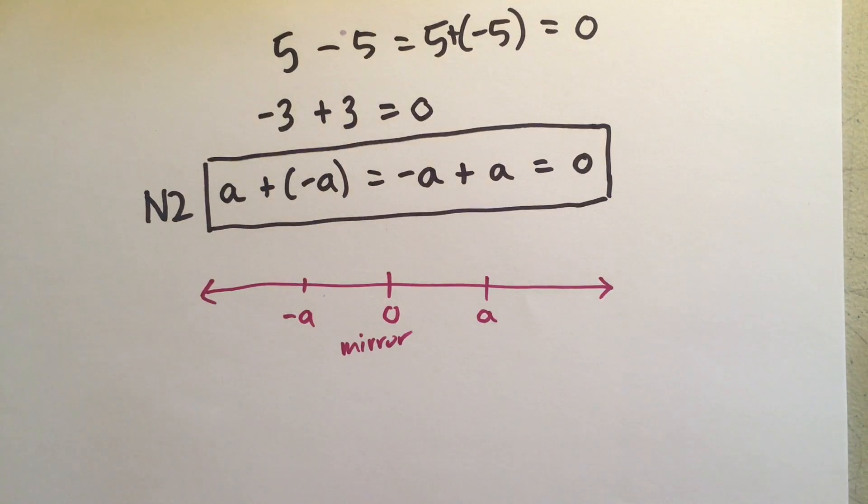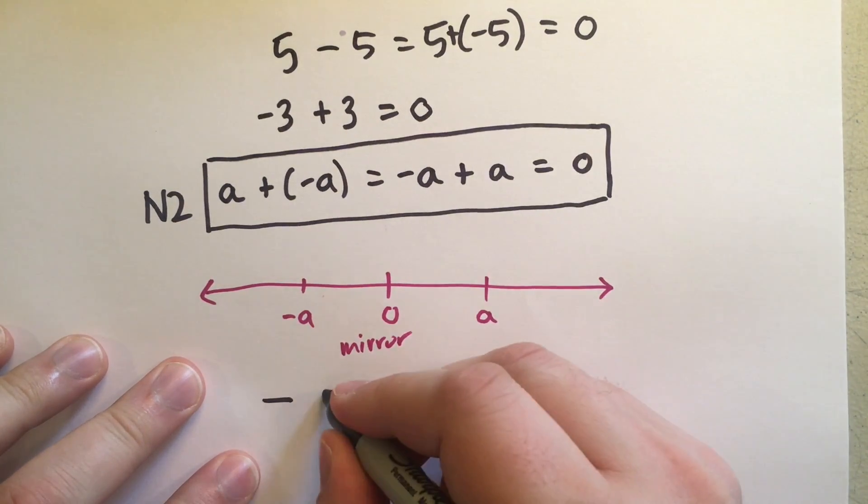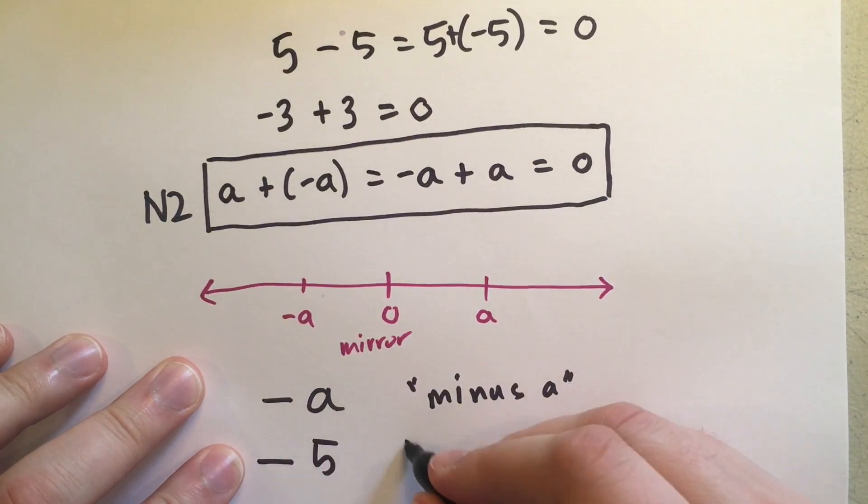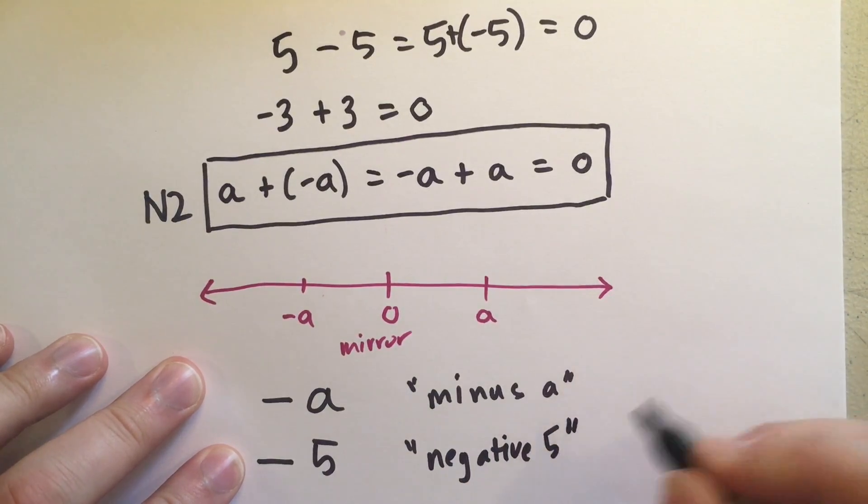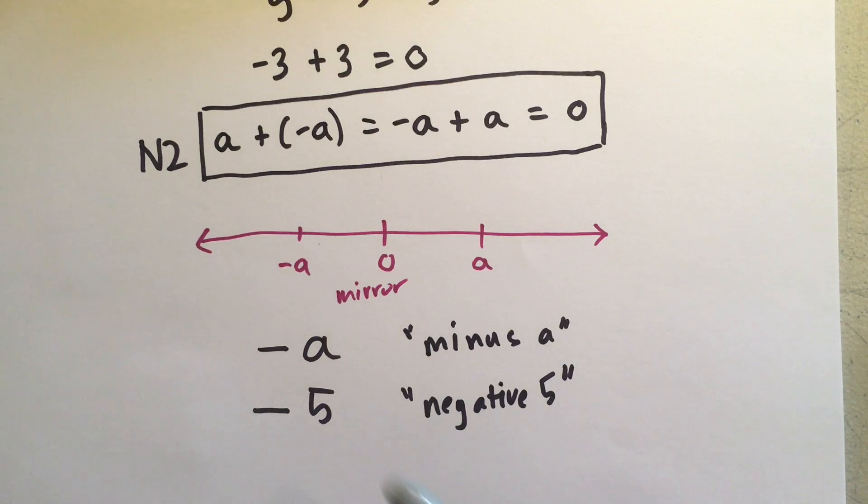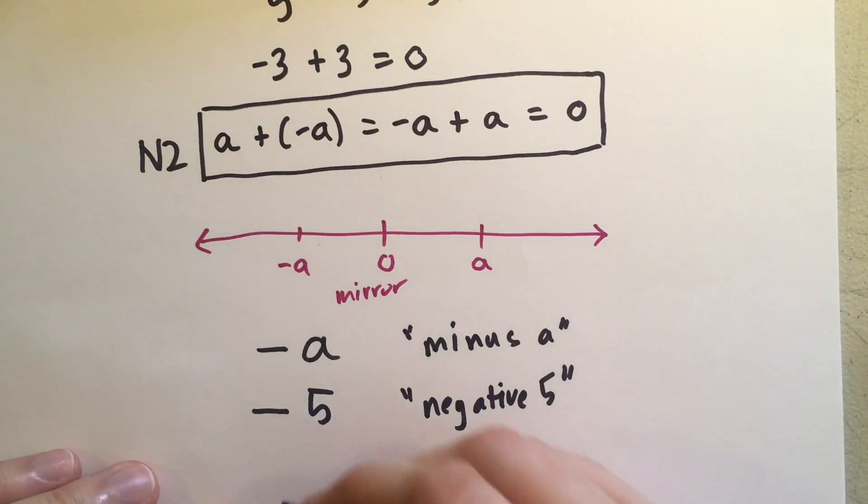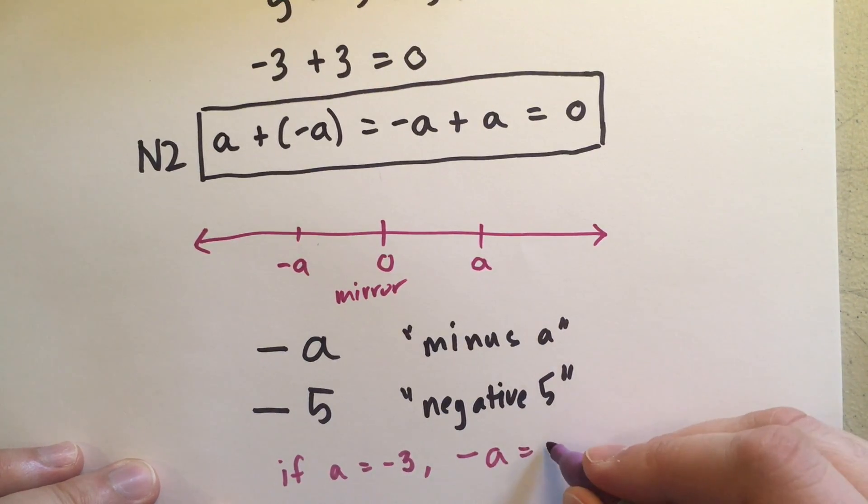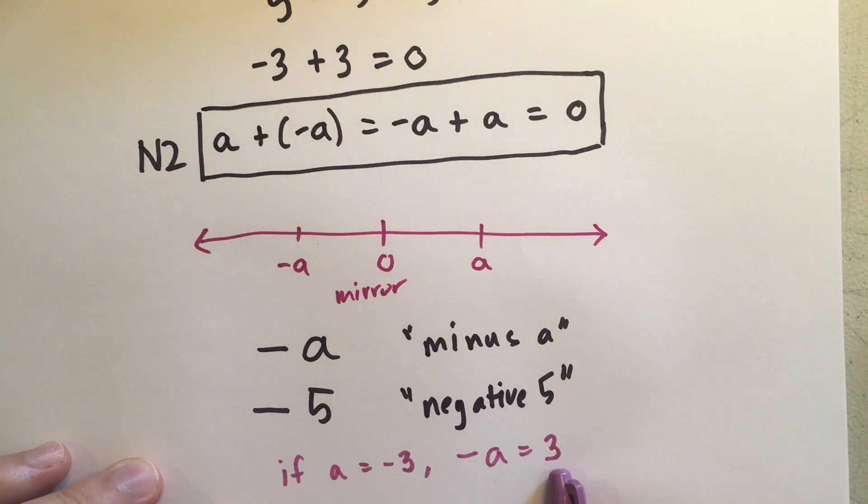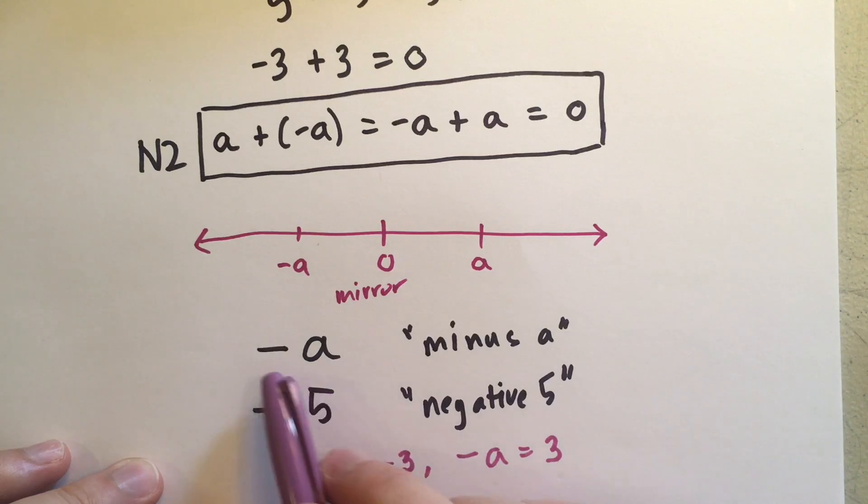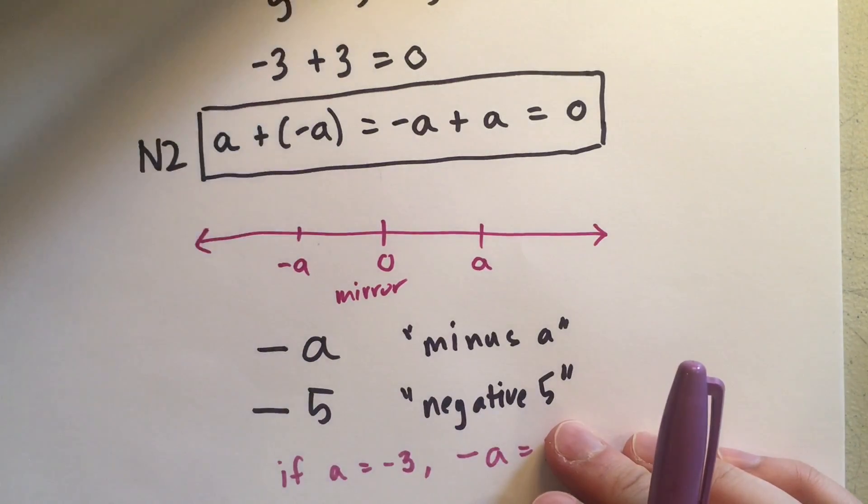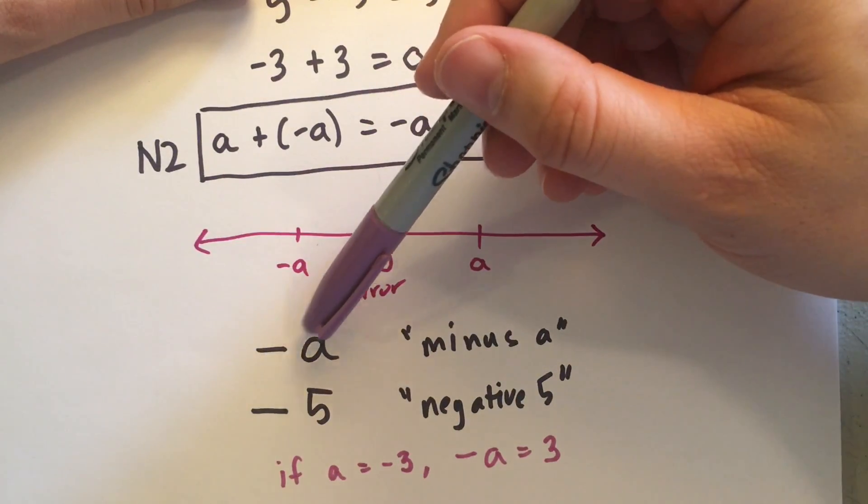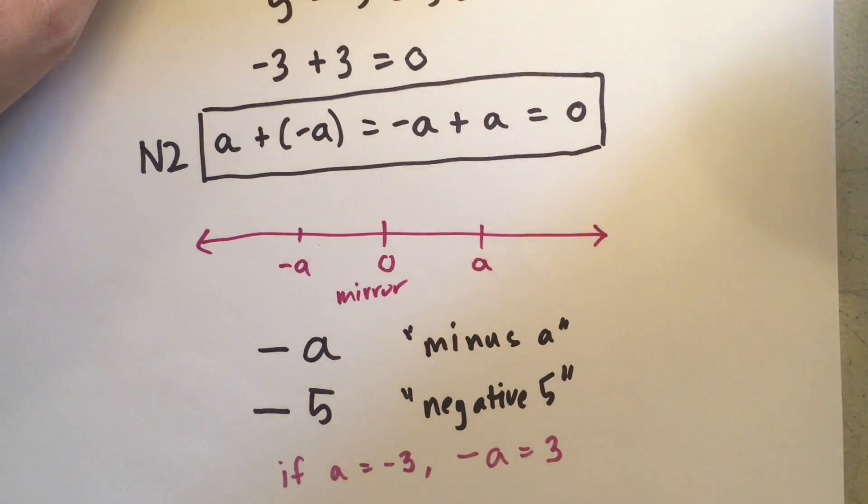All right. Note, and this is important. We say minus A. And we say negative 5. What is the difference? Well, the difference is, what if A was, if A was, let's say negative 3, then minus A would be 3. Minus A is not negative, it's positive. So, if you don't know that A is positive, you can't say that this number is negative. You have to say it's minus A. And it's an important distinction. You'll often hear people, when they're doing their math lectures, they'll say negative A. When it's not really negative, it could be positive.